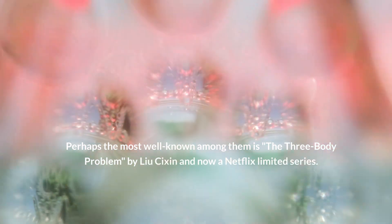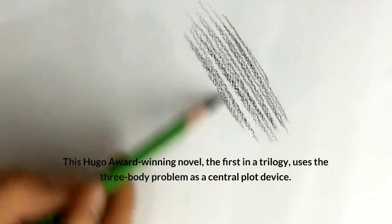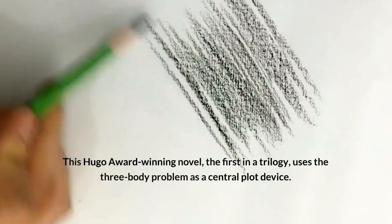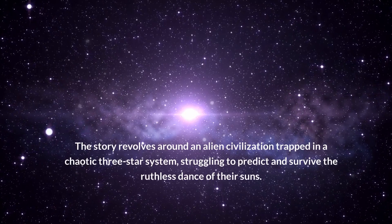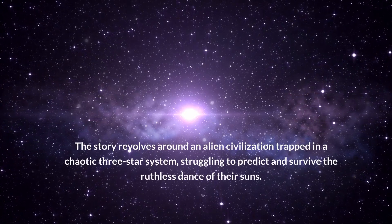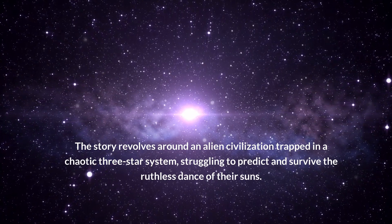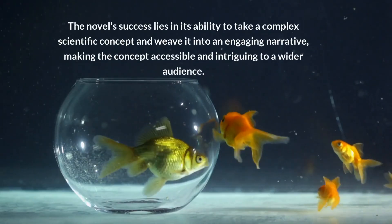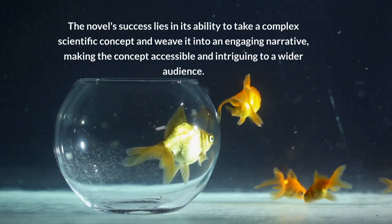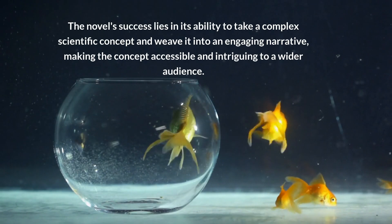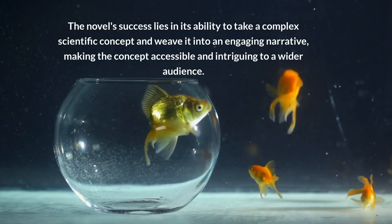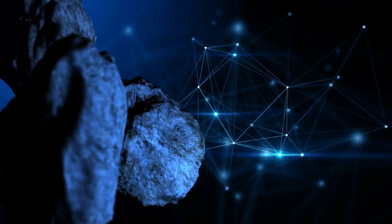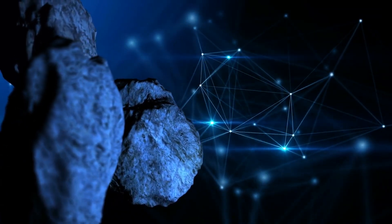This Hugo Award-winning novel, the first in a trilogy, uses the three-body problem as a central plot device. The story revolves around an alien civilization trapped in a chaotic three-star system, struggling to predict and survive the ruthless dance of their suns. The novel's success lies in its ability to take a complex scientific concept and weave it into an engaging narrative, making the concept accessible and intriguing to a wider audience. Liu Cixin's work is a testament to the power of the three-body problem as a narrative tool, symbolizing the unpredictability and chaos of life itself.